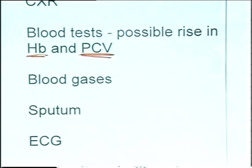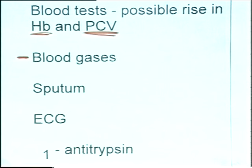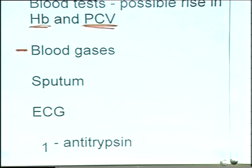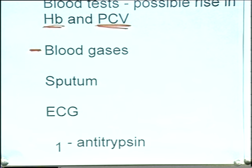Blood gas analysis may be carried out on arterial blood to determine the amount of oxygen, carbon dioxide, and several other things in the arterial blood. Sputum should be observed for volume and consistency, and cultured to identify any specific bacteria causing problems. An ECG is always worth doing to check for right ventricular hypertrophy, cor pulmonale, or coexisting coronary heart disease. Alpha-1 antitrypsin disorder is a genetic condition that can be a possible cause of emphysema.